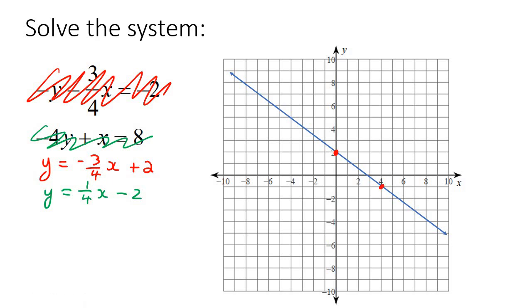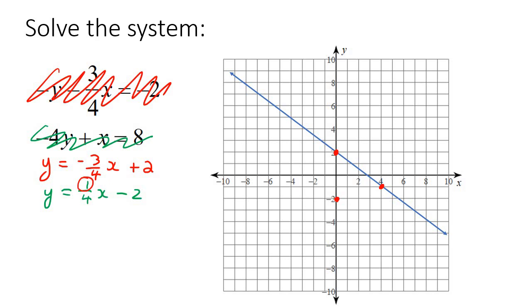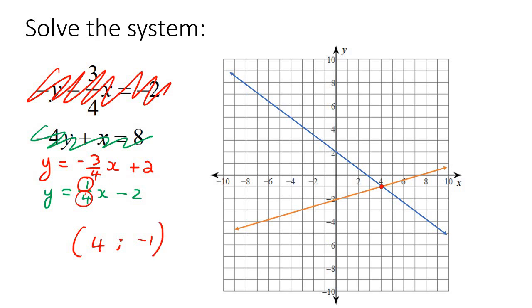The next line starts at minus 2, and it has a rise of 1, so we go 1 up and 4 to the right. We draw a line through that — there is our second line. The point of contact is where they intersect: that would be an x value of 4 and a y value of negative 1. And so that is the final answer: (4, negative 1).